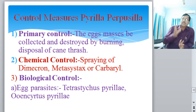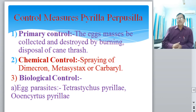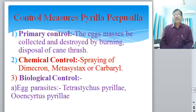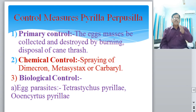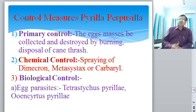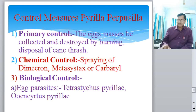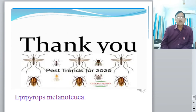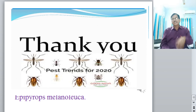Third is biological control methods, which are eco-friendly - one living organism is used to control another. This is environmentally important. In this biological control method, egg parasites such as Tetrastichus pyrillae (also known as Epipyrops pyrillae) are used as biological agents to control the sugarcane pest Pyrilla purpurcilla. This concludes the lecture on the sugarcane pest. Thank you.